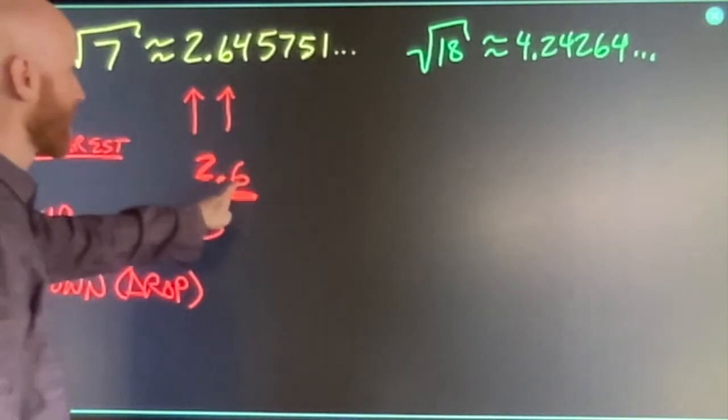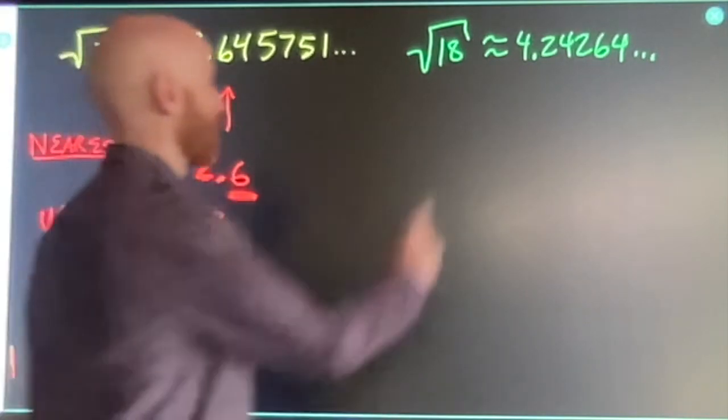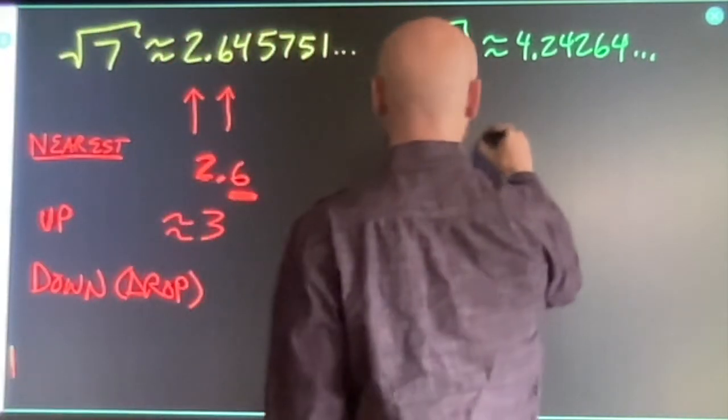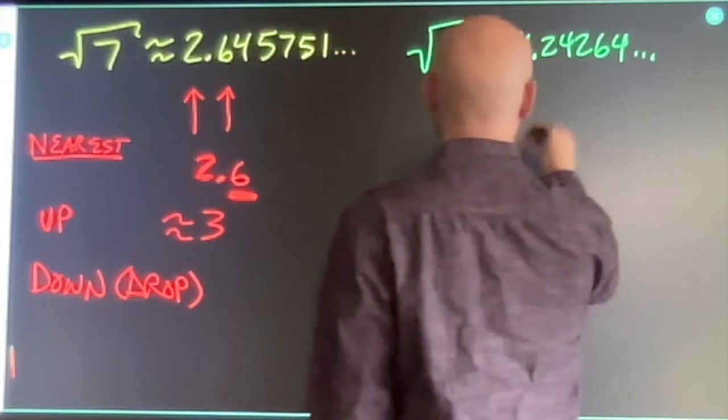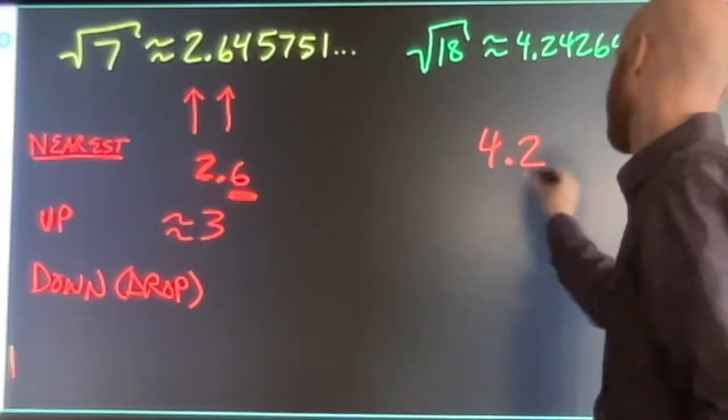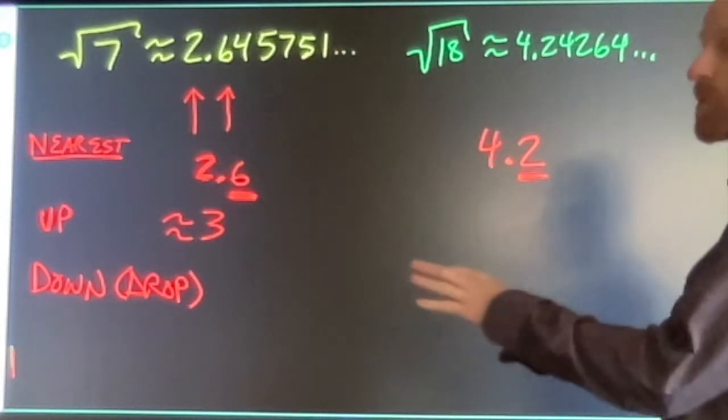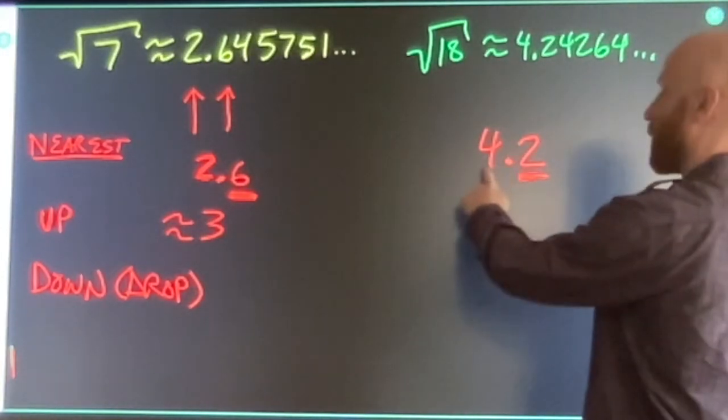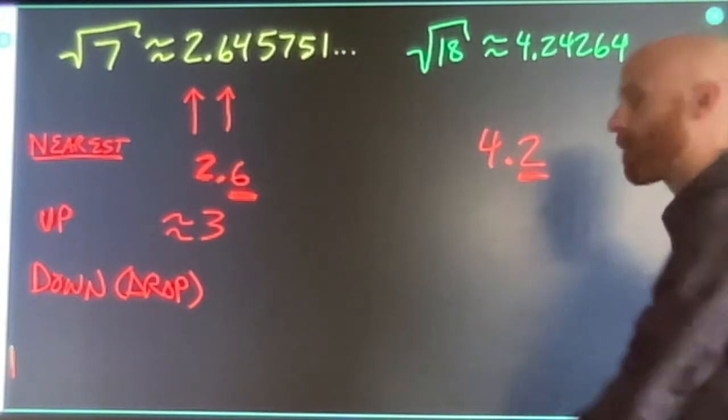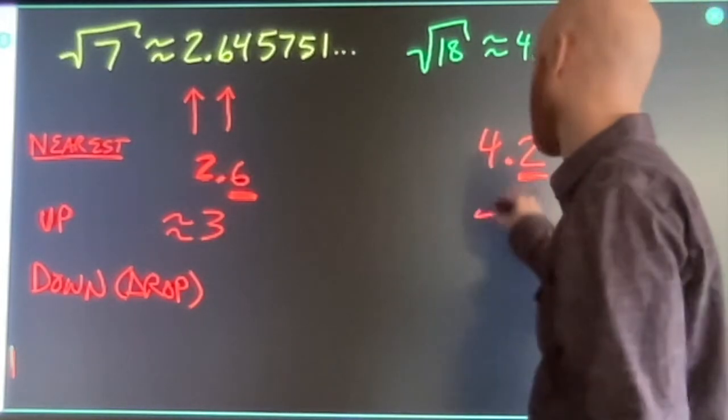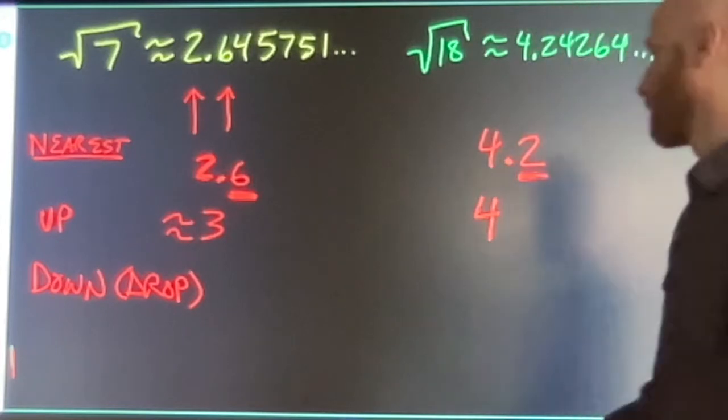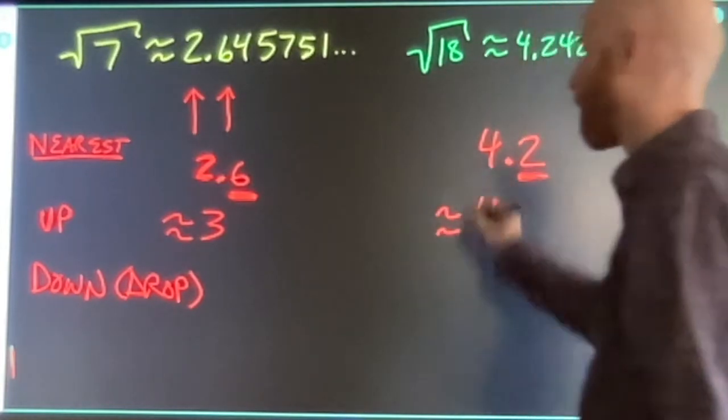If this digit is four or lower, for example, over here, four point two. Two is lower than five. I round down, which doesn't mean that this number goes down. It just means that I drop the digits after it. Four point two is about four.